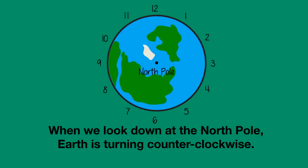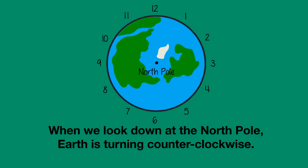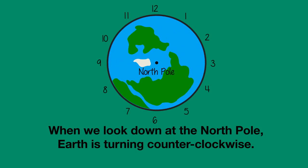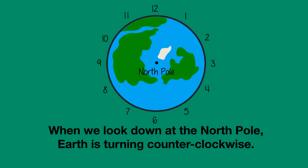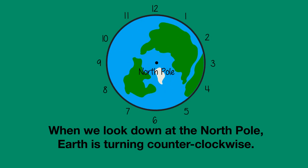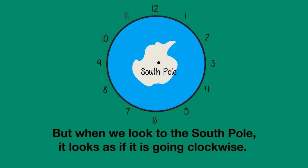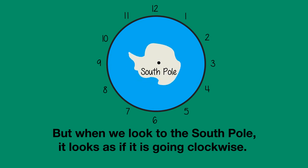Follow me into space. Look back down on Earth, spinning. We go north and we look down at the North Pole. Now you can see that Earth is turning counterclockwise. Now let's go to the South Pole. Earth is still spinning the same way, but now when we look from the other side, it looks as if it's going clockwise.